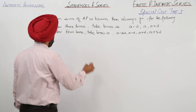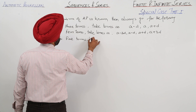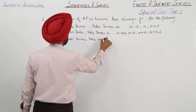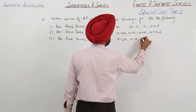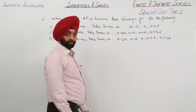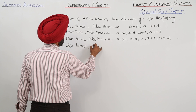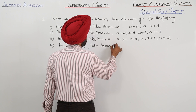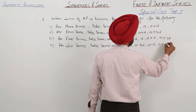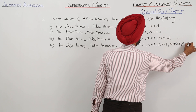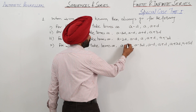For four terms, always go with this form. For five terms, take a minus 2d, a minus d, a, a plus d, and a plus 2d. For six terms, always go with the corresponding form. If you take terms equal to the sequence, you can easily solve for the other terms.